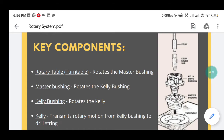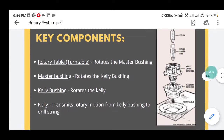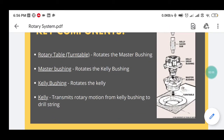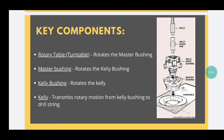The Kelly transmits rotary motion to the drill string. The main purpose the Kelly serves is the transmission of torque from the rotary table to the drill pipe. You might ask: why do we need a Kelly? Why can't we directly connect a drill pipe to the Kelly bushing? The answer is that tubulars such as drill pipes have a circular cross-section, and it is difficult to transmit a good amount of torque to them. So we need a cross-section other than circular — that's where the Kelly comes in. Kelly's have a square or hexagonal cross-section, making it easier to transmit torque, which is then forwarded to the drill pipe.